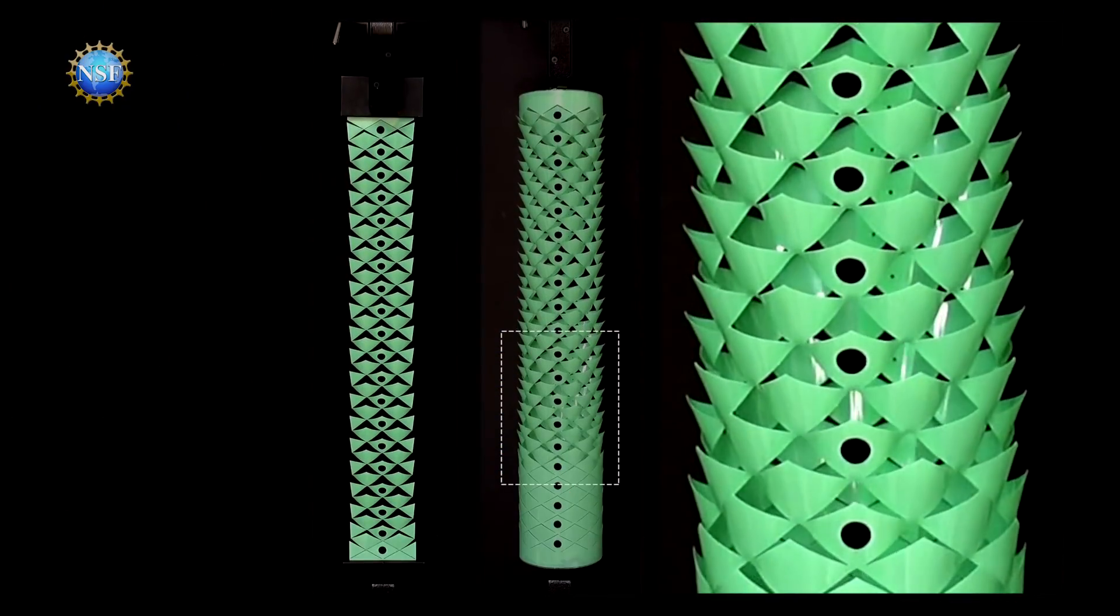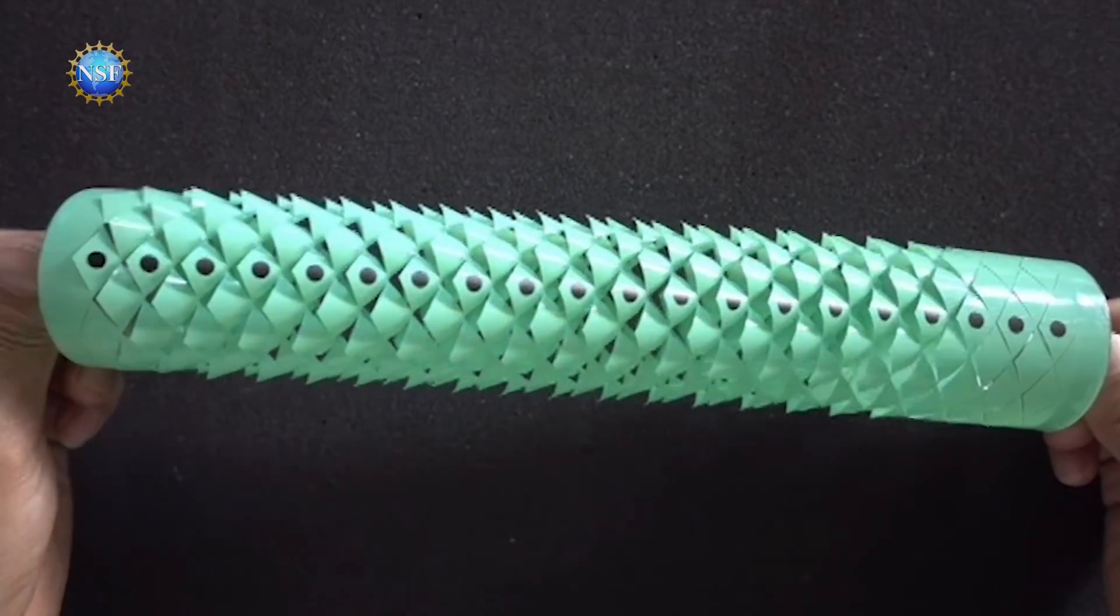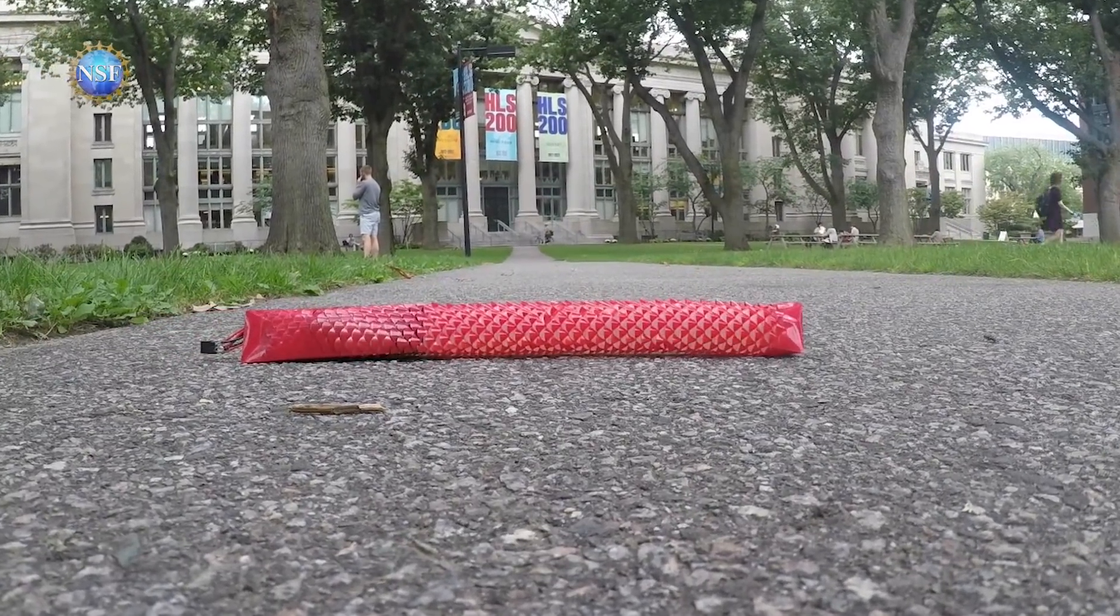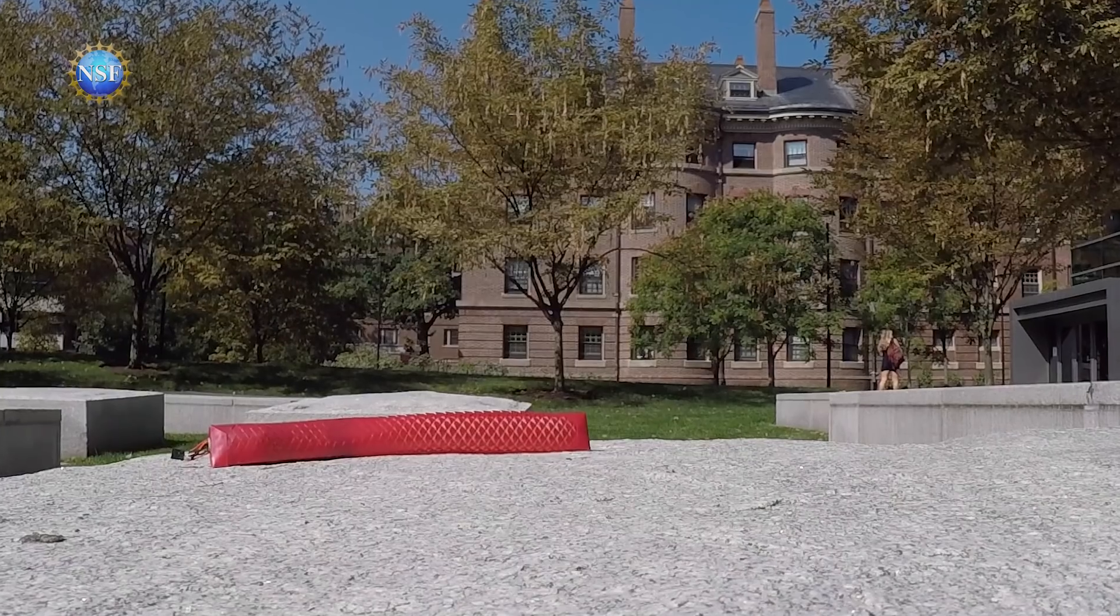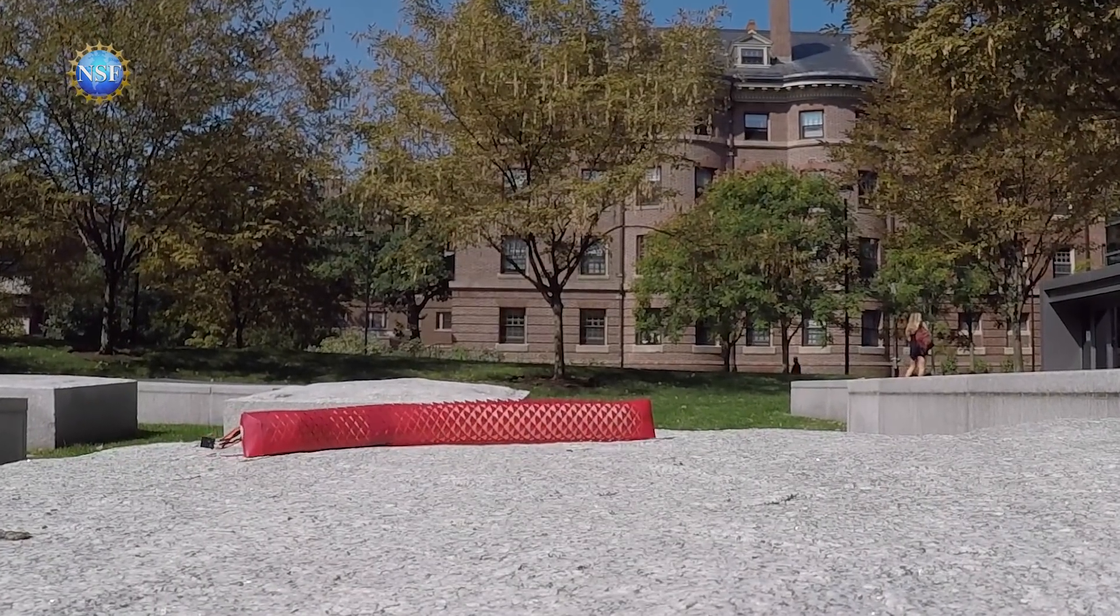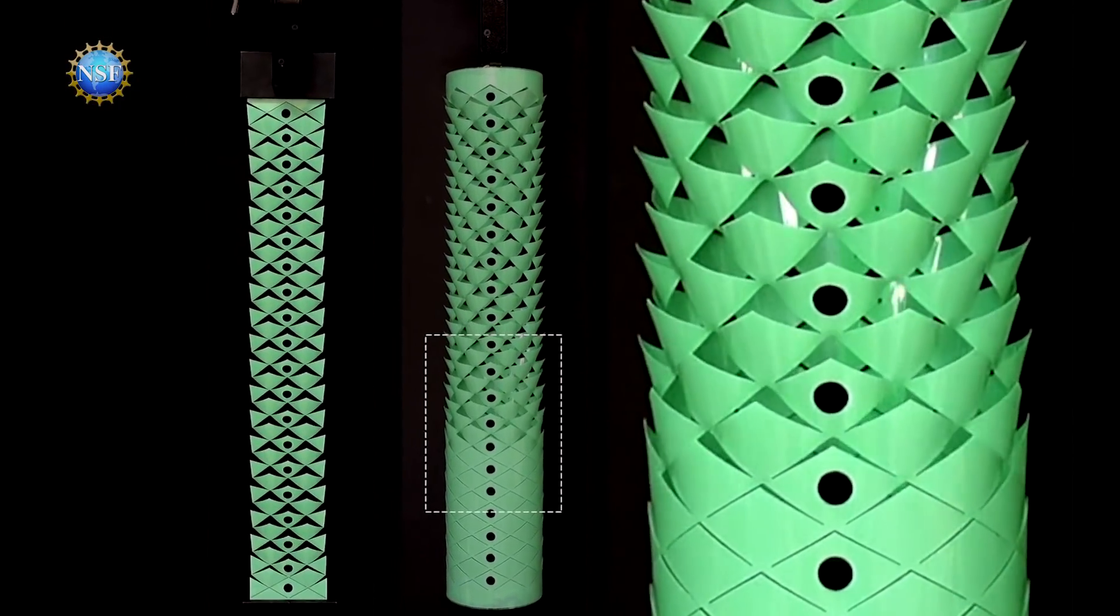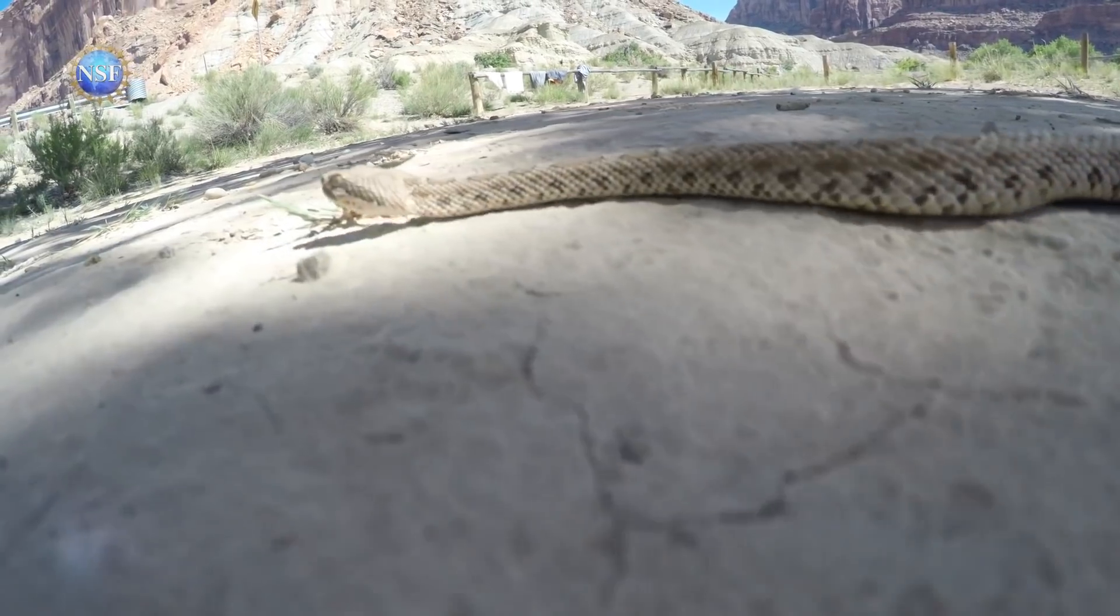The beauty of this kirigami invention is that it is skin deep. A team of researchers has engineered a soft robotic skin inspired by snakes. As the robot stretches, the kirigami cuts pop up, transforming the robot skin into a 3D textured surface that grips the ground just like snake skin.